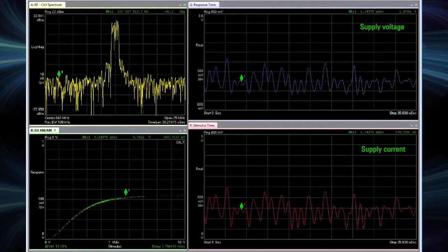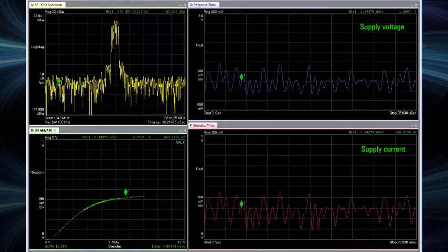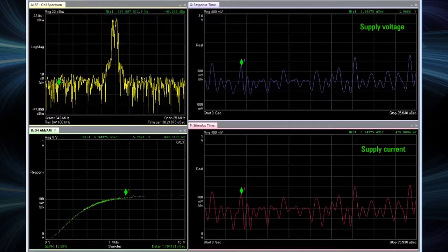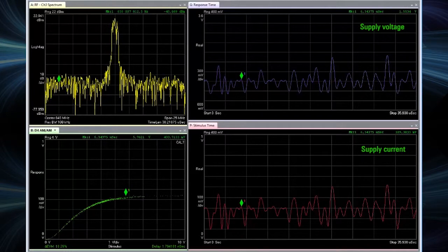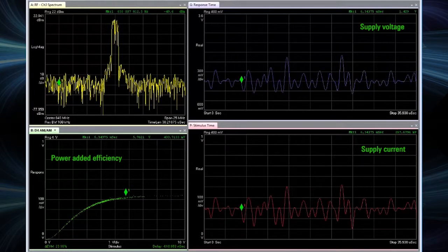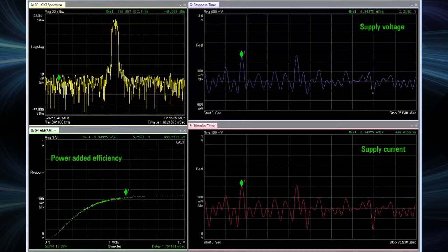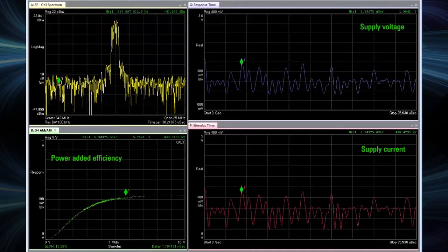One of the key benefits of envelope tracking is improved efficiency. By using the oscilloscope to look at the voltage and current signals in the envelope tracking power supply, we can also calculate and display the power added efficiency in the 89600 VSA software. This allows us to analyze the efficiency improvement we get by using envelope tracking instead of a fixed supply.